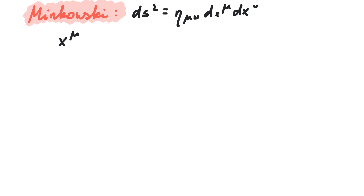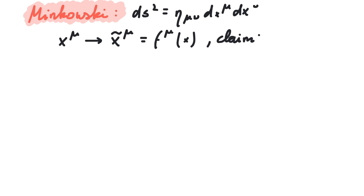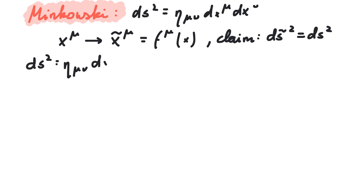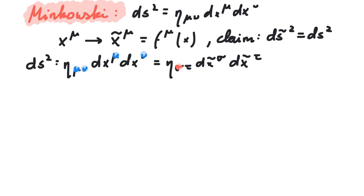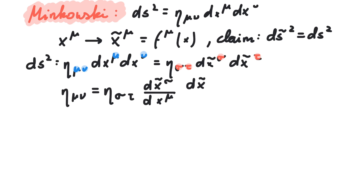Mathematically, this means that x goes to x̃, which is a function of the original x. We want that infinitesimal distances do not get changed under these transformations. We use different indices on the left and right hand side of the equation to avoid any ambiguities. Next, we divide by dx, which now makes the terms on the right hand side resemble a derivative.